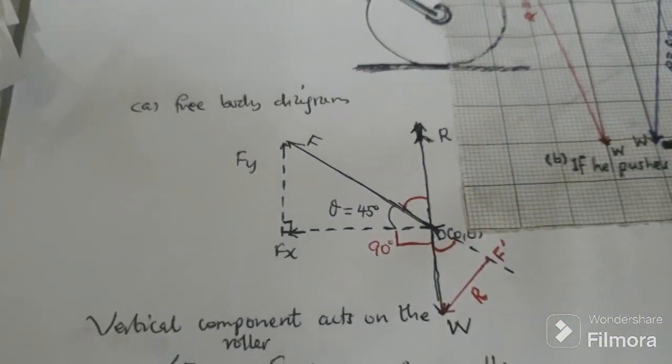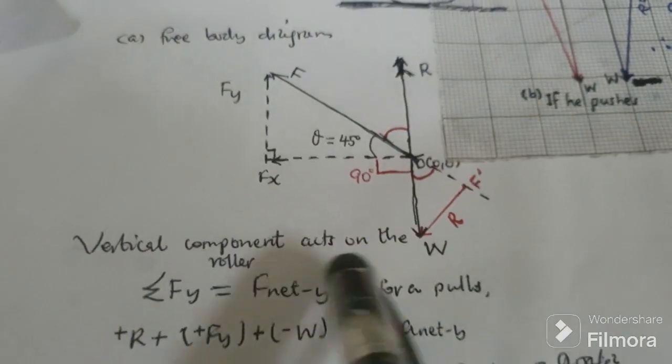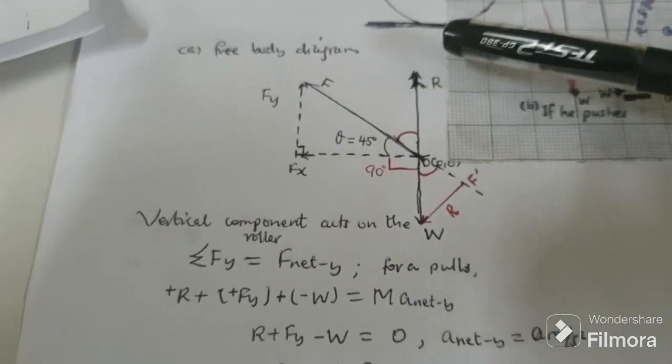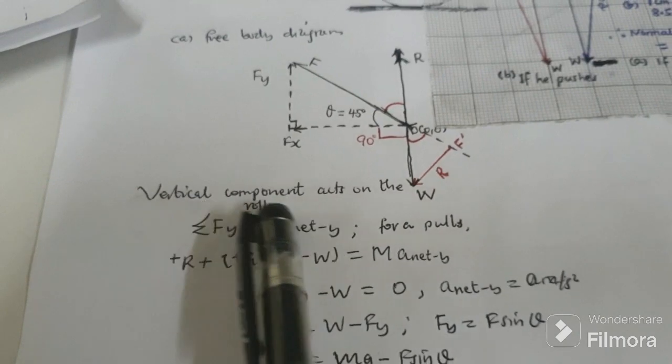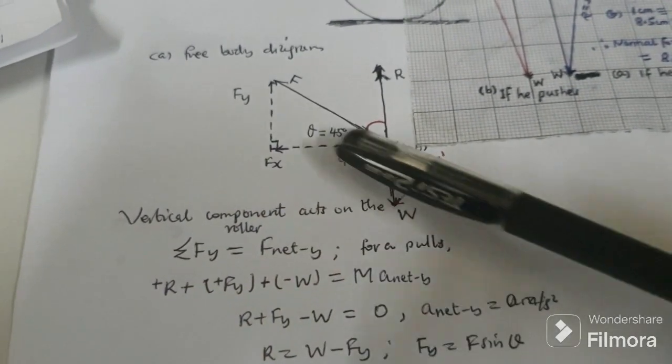Let us use the resolution of vector. We resolve vertical components that act on the garden roller, which is the combination of the normal reaction force and we have a component of the applied force, that is when he pulls.